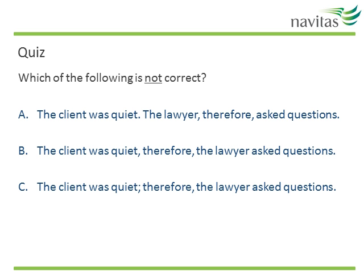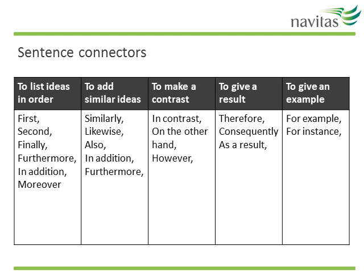Here are some words to link two separate sentences. You can use words like first, second, finally, furthermore to list ideas. You could use similarly, likewise, or in addition to add similar ideas. If you want to make a contrast, you could say in contrast, on the other hand, or however.